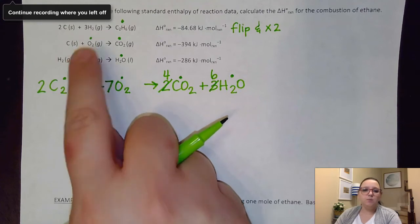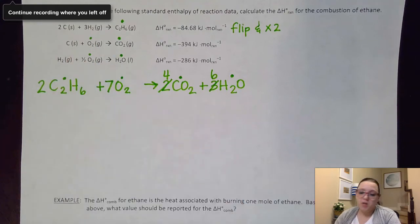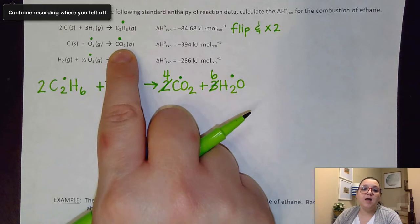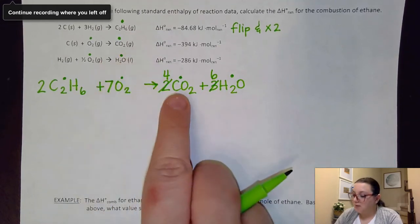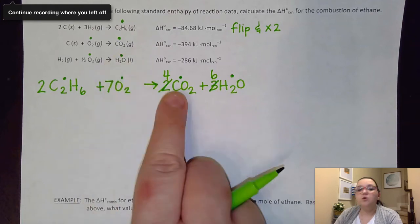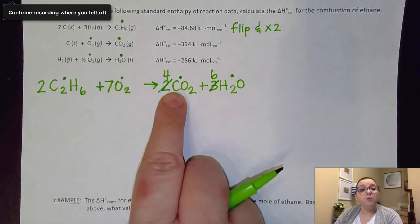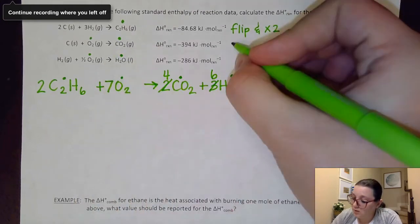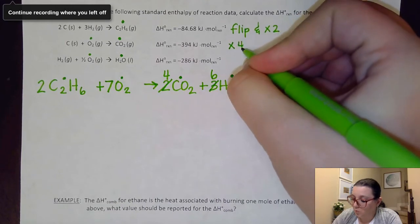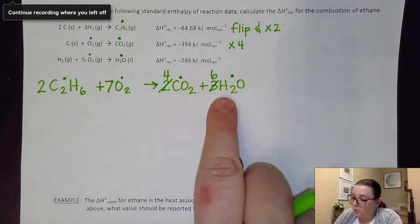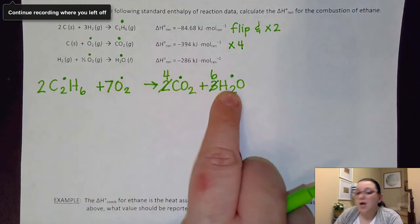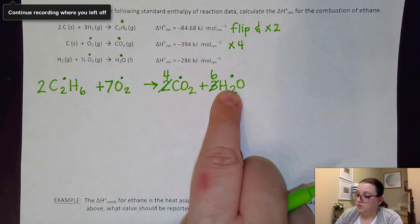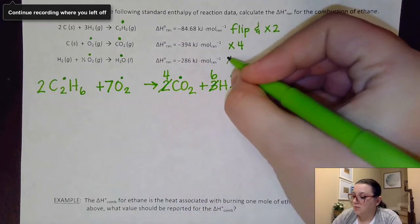For the next equation, I'm going to ignore the oxygen for just a moment because it's in more than one equation, and focus on the CO2. It's on the correct side, but it doesn't have the correct coefficient — I want a coefficient of four, so I'm going to need to multiply that by four. Finally, for the water, it's on the correct side but again not the correct coefficient, so I'm going to multiply this by six.